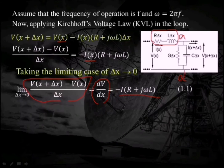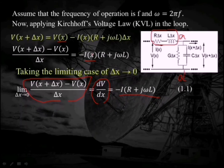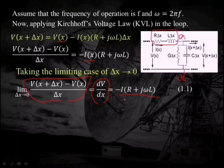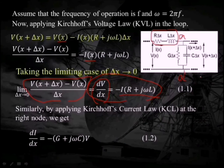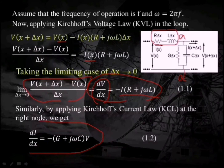Note that voltage and current are also functions of time, but for simplicity we are considering only the function of x for now. Applying KCL at node a for the current equation, we get di/dx = −(G + jωC)v. These equations are named 1.1 and 1.2 — two differential equations in two variables v and i.